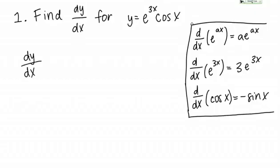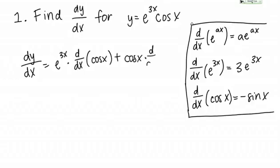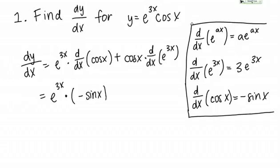So dy/dx equals — now we're going to use the product rule. The way I remember it is: first times the derivative of the second, plus second times the derivative of the first. So in this case, that's e to the 3x times the derivative of cosine — which we said was negative sine — plus cosine times the derivative of e to the 3x, which is 3e to the 3x.